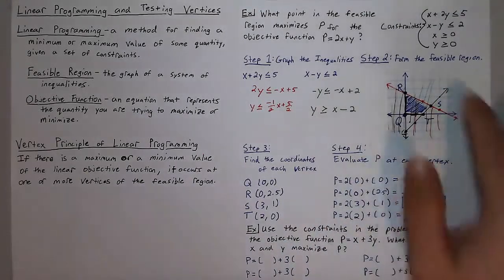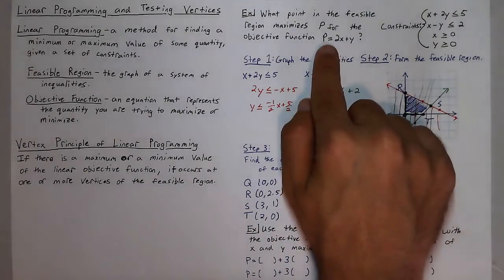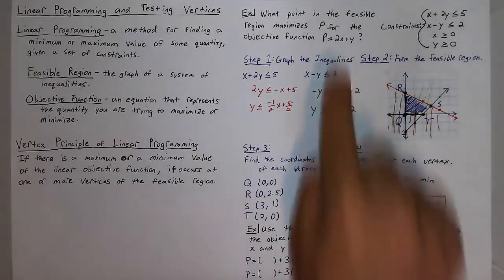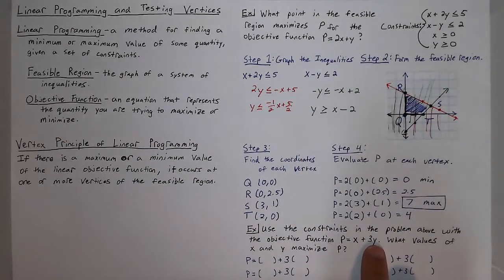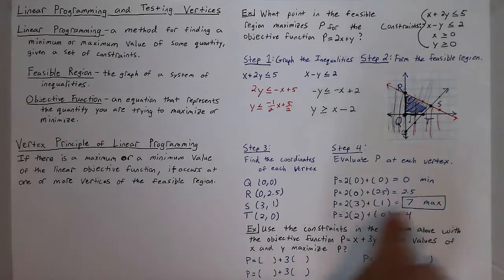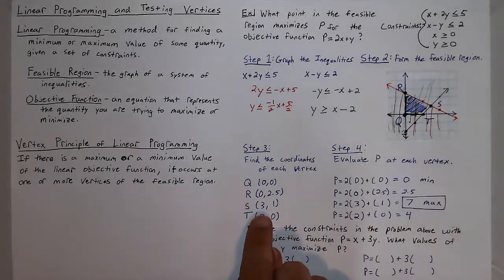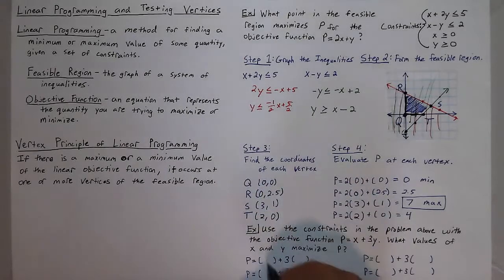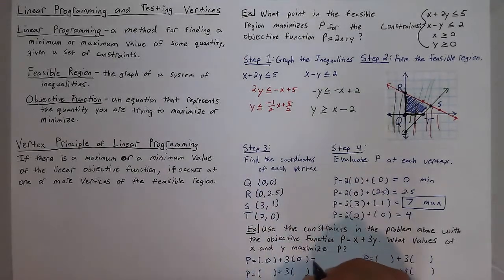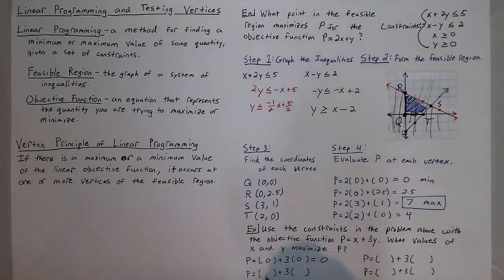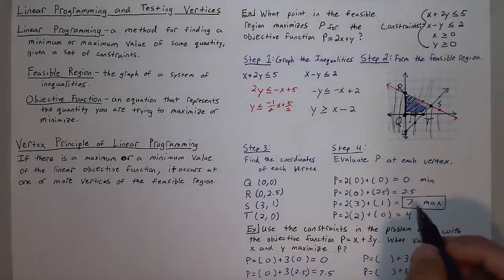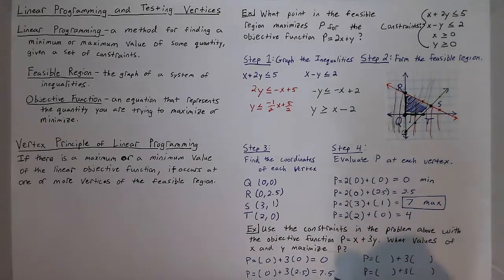Now let's look at this same feasible region, but what happens if we change our objective function? Meaning instead of two x plus y, we make it x plus three y. Does that change where our maximum lies? Is it going to still be at three one? Well, let's find out. First, let's plug in zero zero. That still gives us zero. Zero 2.5. So zero plus three times 2.5. This gives us 7.5, which is already bigger than our max before. So this could be our maximum.